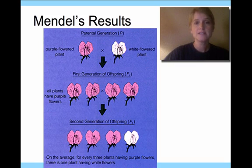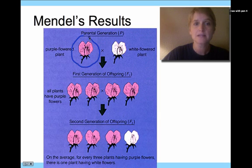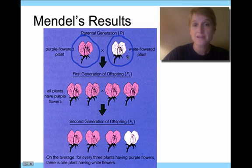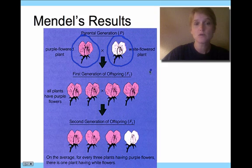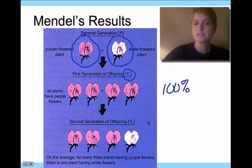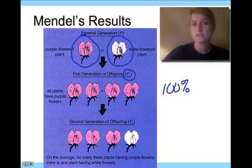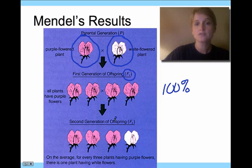What he found in his experiments was that he crossed what's called a true breeding plant. He looked for a plant he knew was a purple-flowered plant and crossed it with one that only produced white flowers — a true breeding purple flower plant with a true breeding white flowered plant — to see what he got. In that first generation of offspring, the F1 generation, he noticed that a hundred percent had purple flowers. He found that result over and over: no matter what cross he did with true breeding plants, he always ended up with a hundred percent of one of those variations.